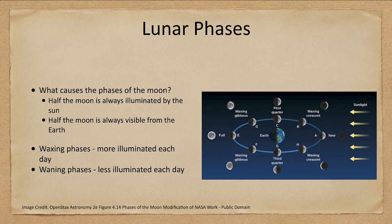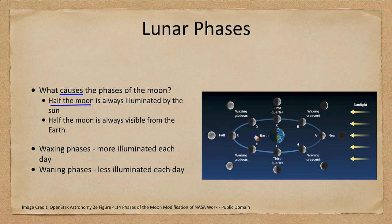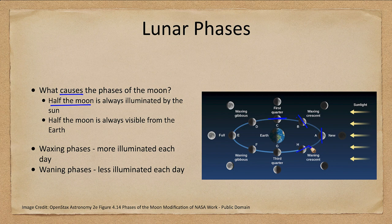Let's start with the phases and what causes them to occur. The moon is a solid object which is illuminated and shines by sunlight, so like any solid object, half of it will always be illuminated. Half of the moon is always illuminated by the sun, and also half of the moon is visible from Earth. Half is facing Earth, half is facing away, and we can see the portion facing toward Earth.